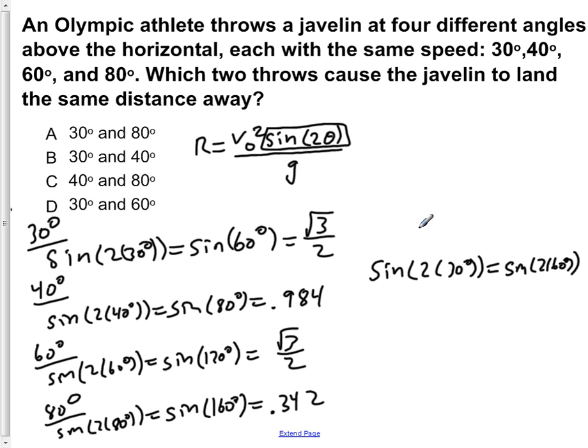So here, if they're thrown at an angle of 30 degrees and 60 degrees, they will land the same distance away. So the answer to this question is D. If the javelin were to be thrown at both 30 degrees and 60 degrees, they would land the same distance away from the thrower.